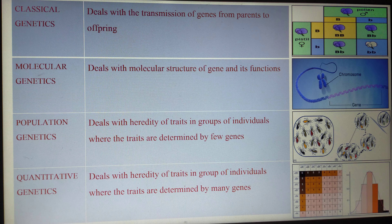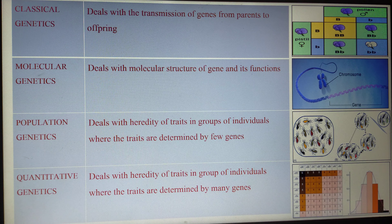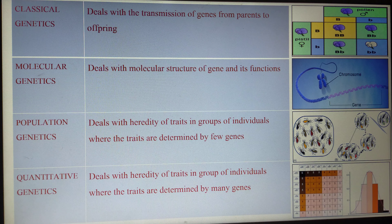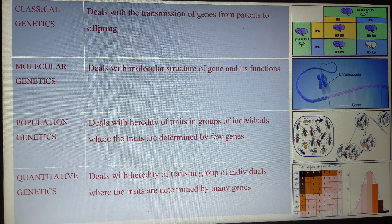The third type is population genetics. Here, genetics is studied on a population basis — on a large group. It studies how characters differ or are maintained in a large group of individuals, and how genes are transmitted, including gene flow, genetic drift, and Hardy-Weinberg equilibrium.